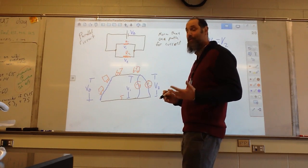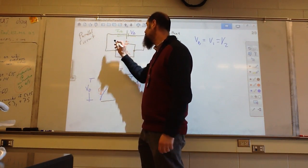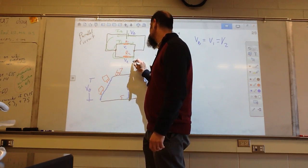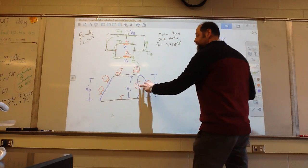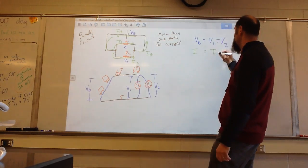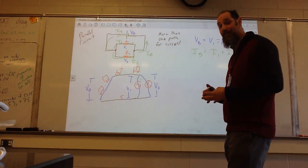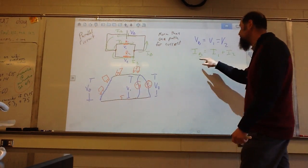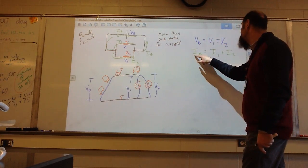So we've developed a rule for current. The current provided by the battery — IB — splits so that some goes through branch one as I1 and some through branch two as I2, then they rejoin. Since current can't disappear, I1 plus I2 equals IB. This is different from series: notice the two rules are reversed. In series, because there's only one path, the current was the same and the voltages added up. Here the voltages are the same and the currents add up.